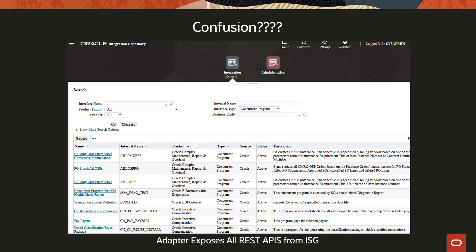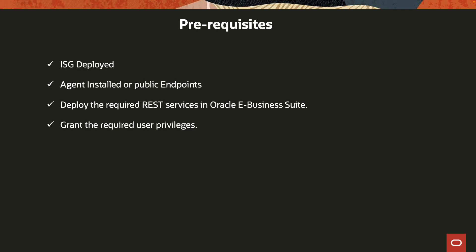For that, there are certain prerequisites — you would have to get the ISG (Integrated SOA Gateway) deployed. You would need either the agent or some sort of network connectivity access from OIC to your EBS instance. And then you need to deploy the required REST services. So you would go into ISG, search for concurrent programs, and if you find the one you're trying to run, you would deploy that REST API, and then grant the user. When you create a connection within OIC, you need to give it a username and password, and that user — usually a service account — would need grants on the APIs so that user can invoke it.